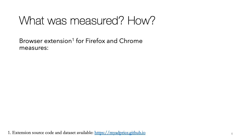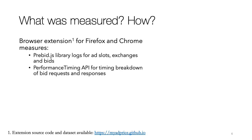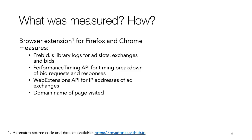To conduct our measurement study, we developed a browser extension for Chrome and Firefox. We use the prebid.js library, which is a popular library used to implement header bidding on different websites, to get data on how many ad slots there are on a web page, what exchanges are being contacted, and what kind of bids they're sending. We also use the Performance Timing API to get a timing breakdown of the bid requests and responses, and the Web Extensions API to capture the IP addresses of the ad exchanges that the browser contacts. We also store the domain name of the web page visited — just the domain name, not the full URL — and the user's city-level location.